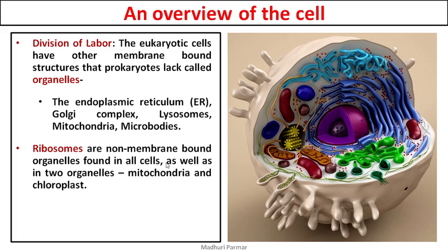The next organelle is ribosomes — the red-colored dots you see around the endoplasmic reticulum. They are organelles which do not have a membrane. They are the ones without a membrane among the organelles we are studying.